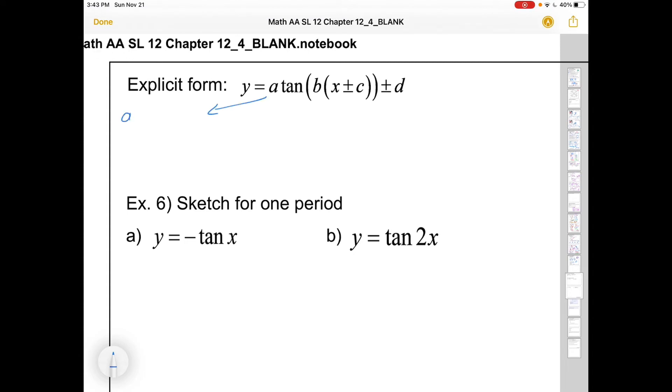So A is going to be our vertical stretch factor. Stretch by a factor of A or the absolute value of A. Negative A means an x-axis reflection. We won't say the word amplitude though here.